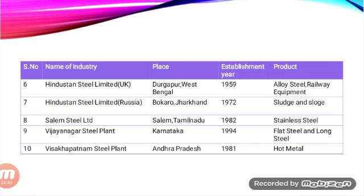The last industry we study is the software industry. India is home to some of the finest software companies in the world. This industry began in 1970 with the entry of TCS — Tata Consultancy Services — along with L&T Infotech as major industries. At present, 500 software companies are exporting to nearly 95 countries in the world.